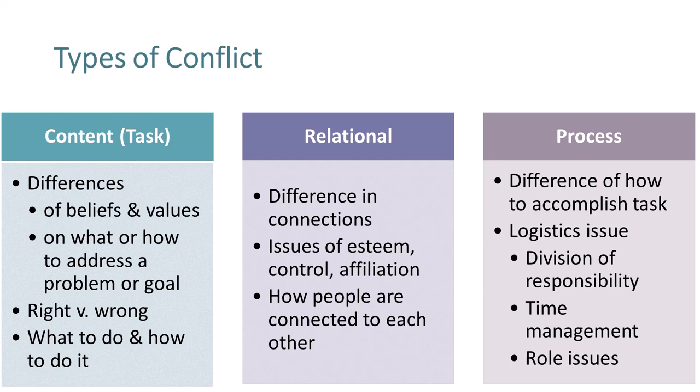Research also suggests another type of conflict: process conflict. This dimension is related to the logistics of accomplishing a task. With process conflict, the issue isn't about differences between people, values, or how to approach a goal — it's differences in how people accomplish that goal together. This is when conflict arises from disagreements over task division and responsibility. It could be conflict over differences with time management, scheduling, group contribution, or role. For instance, conflicts over social loafing or having issues finding a time for everyone to meet are process conflicts.